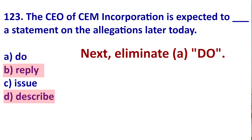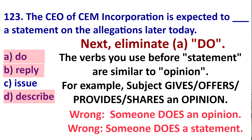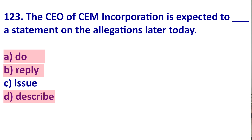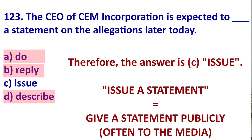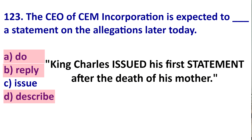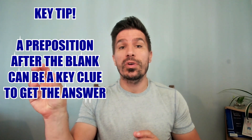Now eliminate A, 'do.' The verbs that go with 'statement' are similar to those used with 'opinion' — someone gives, offers, or provides an opinion, not 'does' an opinion. The same is true with 'statement': someone gives, offers, provides, or issues a statement. Therefore the answer is C, 'issue.' It means to make a statement in a public setting like a press conference. For example, from the news: 'King Charles issued his first statement on the death of his mother.'